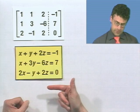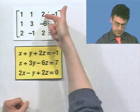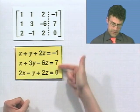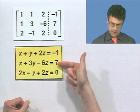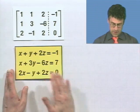And then the coefficients for the z's are in the third column, 2, negative 6, 2. And then we augment it with the actual constants, negative 1, 7, 0, and that's what we get here. So this is the matrix version of this.